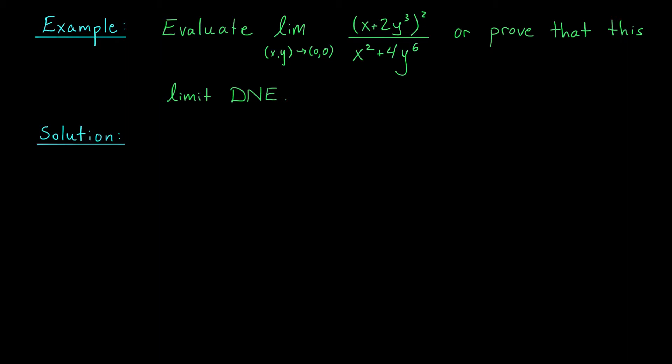Alright, how do we do with this question? I'm going to approach this problem just like I would with any multivariate limit problem. I'm going to start by trying to get a sense of what my function is doing as we approach the origin along a few simple paths, maybe through straight lines or even parabolas. The simplest path I can think of to the origin is probably along one of the coordinate axes.